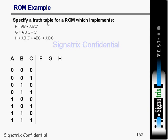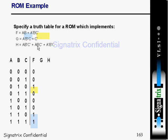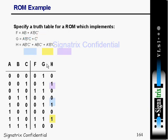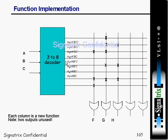Now you need to specify a truth table for the ROM. The functions given are: f equals AB plus A-bar·B·C-bar, and g and h are defined similarly. For inputs A, B, C you find the values of f, g, and h. For f you are evaluating from this equation, and for g and h you are doing the same.